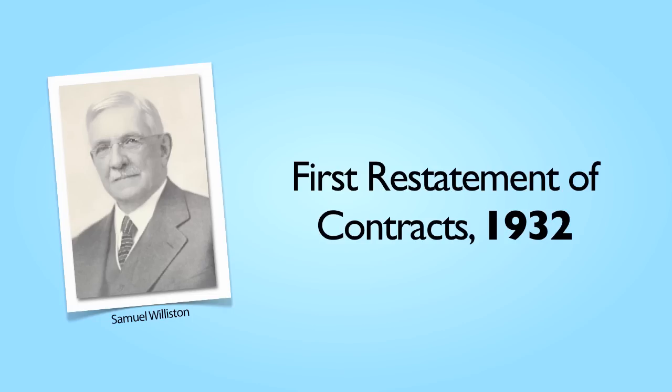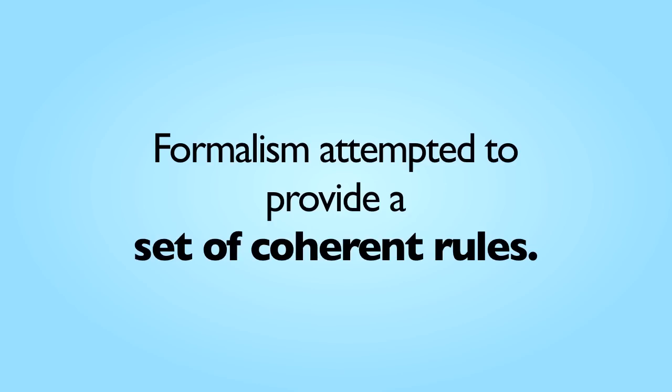The first Restatement of Contracts was issued in 1932. It was largely the vision of Professor Samuel Williston and reflected a formalistic philosophy of contract law. Formalism assumed the law could be organized into a set of coherent rules that, when properly applied, would lead to consistent results.